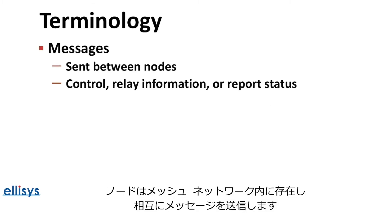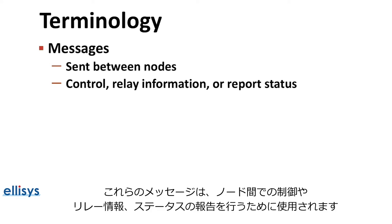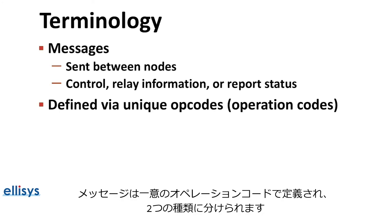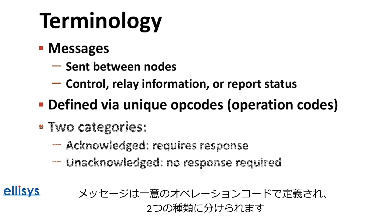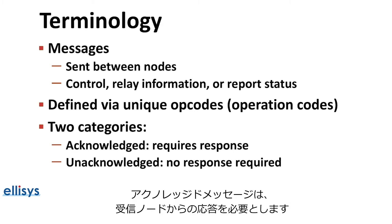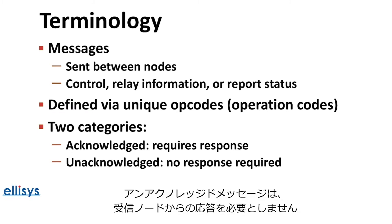Nodes within a mesh network send messages to each other. These messages are used to control a node, relay information between nodes, or to report status to each other. Message types are defined via unique op codes or operation codes. There are two categories of messages: acknowledged messages, which require a response from the receiver node or nodes, and unacknowledged messages, which do not require responses.